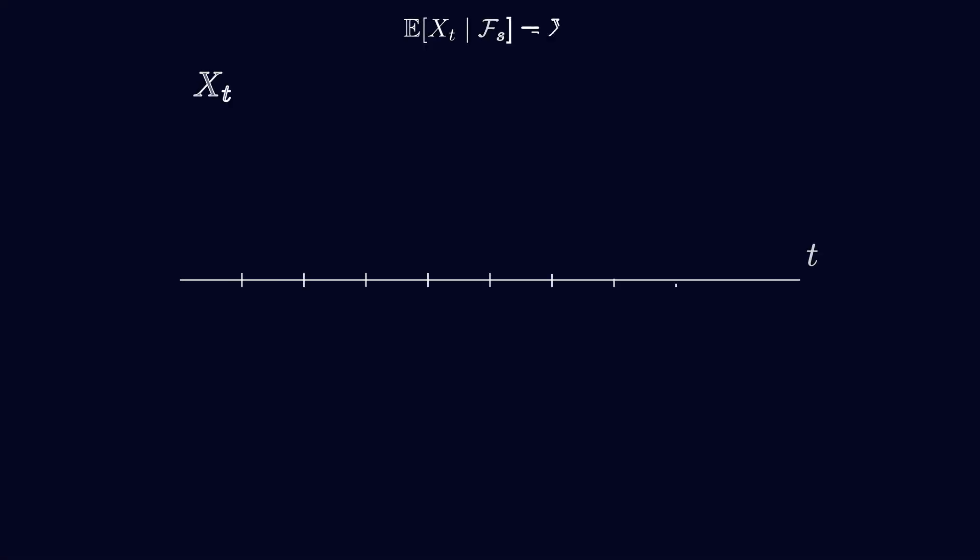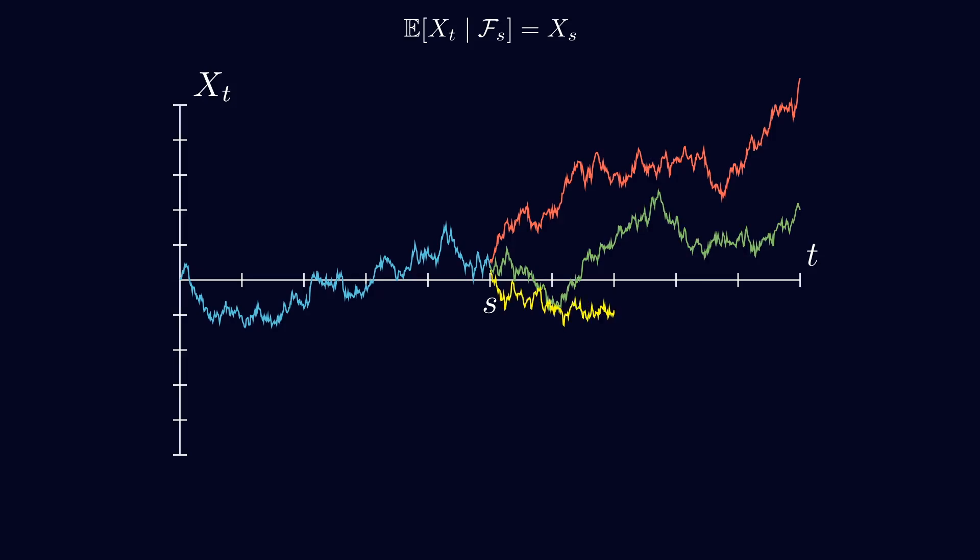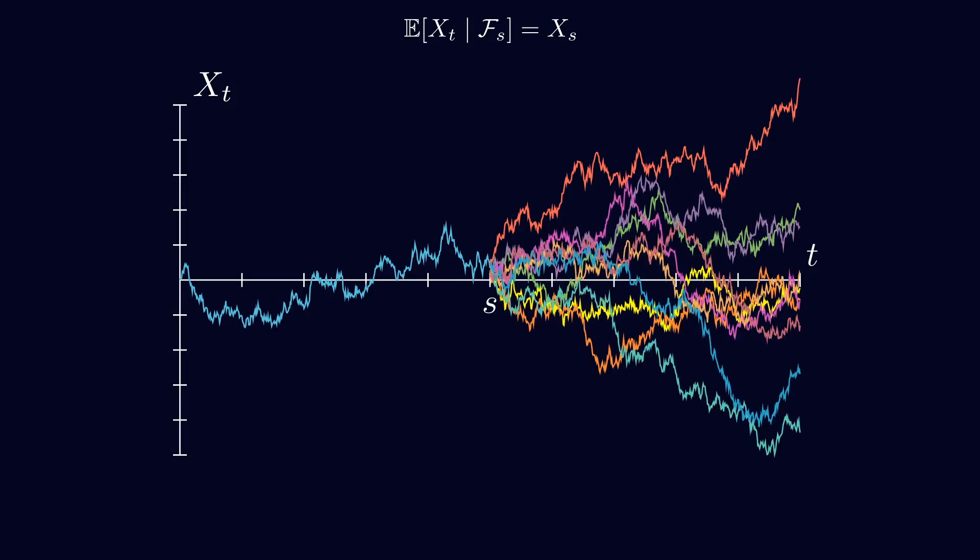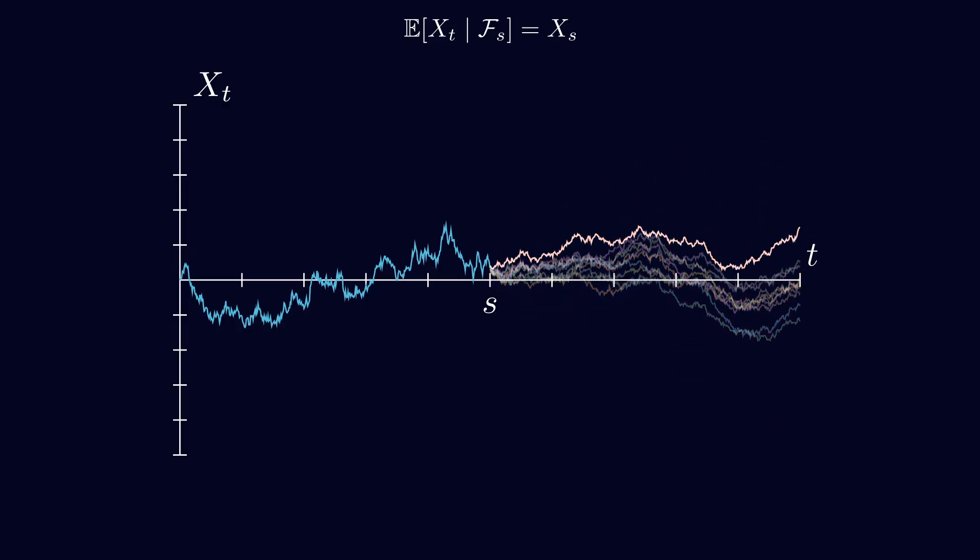To end this video, I would like to introduce the concept of a martingale. A simple example of the martingale property is to look at this process and stop it at a certain point. We can then simulate what comes next multiple times to see what happens. Then, we can do the average. What you can notice is that if you know the price at time s, the values in the future will oscillate on average around the value at s.